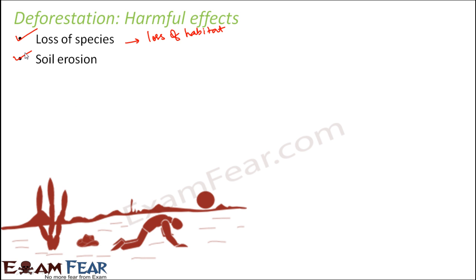The next harmful effect is soil erosion. When trees are present, their roots hold the soil tightly, so soil erosion cannot take place. When we start cutting down trees, we are left with fewer or no trees in that area. This allows the top layer of soil to get easily washed away by water — whenever there is rainfall or irrigation, there is nothing to hold the topsoil tightly because the roots are no longer there. The soil becomes very loose and can be carried away easily by water.